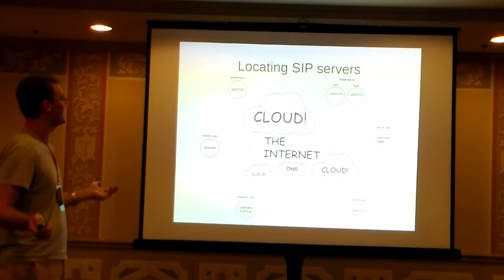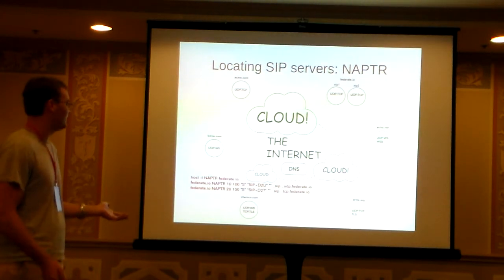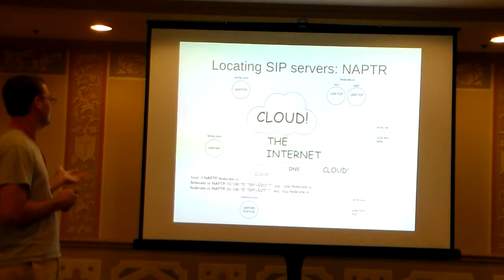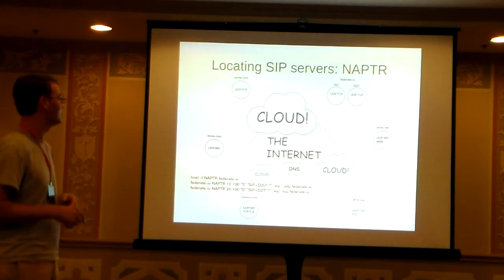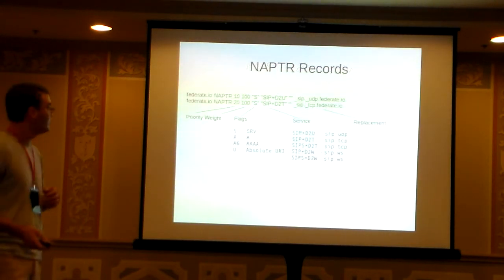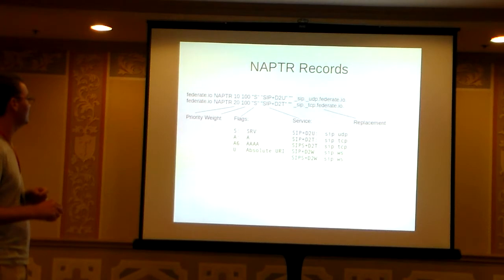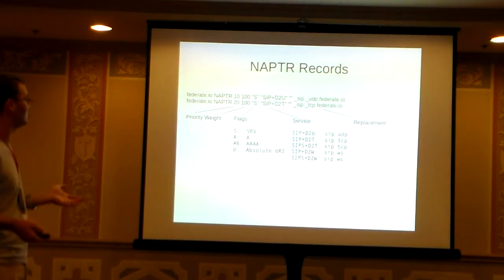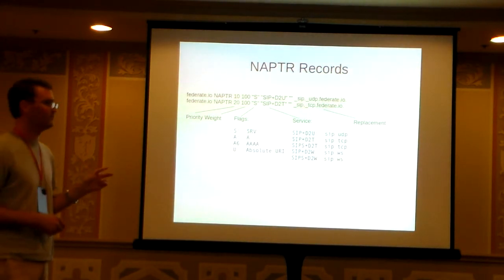Let's say Bob at borax.com is calling frank at federate.io. The general process: first do a NAPTR lookup on federate.io to find out what SRVs are available. It comes back with two SRVs for UDP and TCP, since federate.io supports both transport protocols, whereas borax.com only supports UDP and WebSocket. Looking at a NAPTR record, the interesting fields are priorities, weights, and flags — where S indicates an SRV record, A is an A record, and the service type indicates the transport protocol.